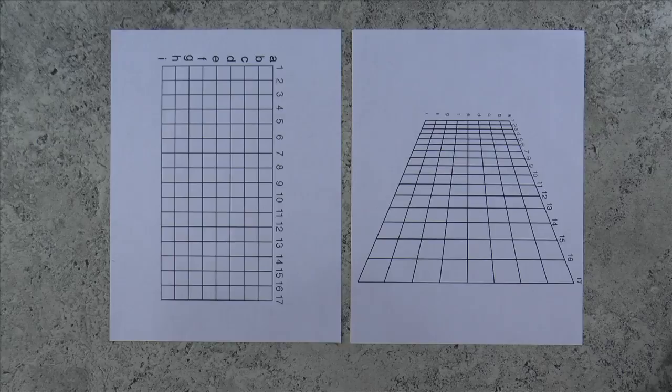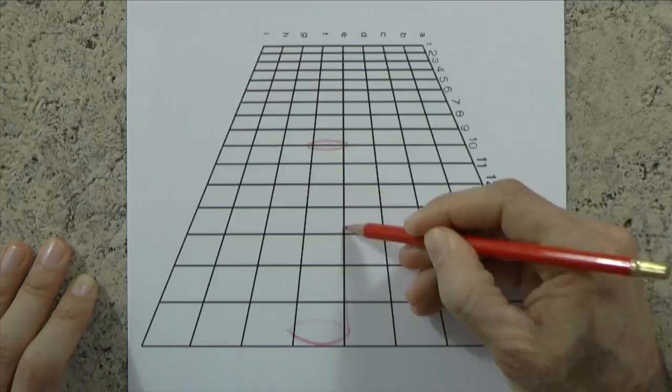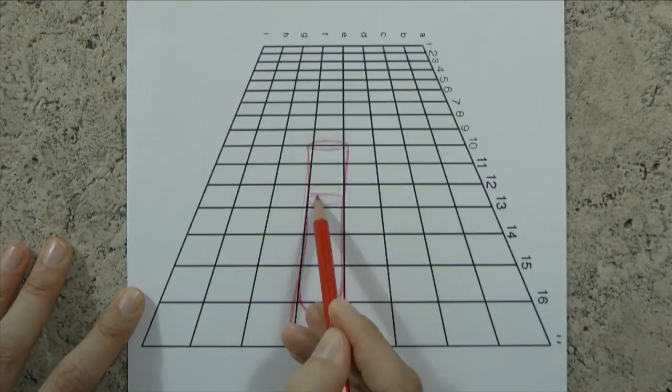To achieve this you need two templates. One with regular squares and one in perspective. To start we sketch a drawing in the template that is in perspective. We do it normally as if we were drawing on a blank piece of paper. Only be careful of not going out of the template. In this case I will do a rose on a vase.